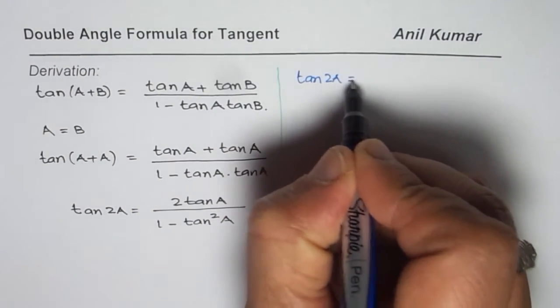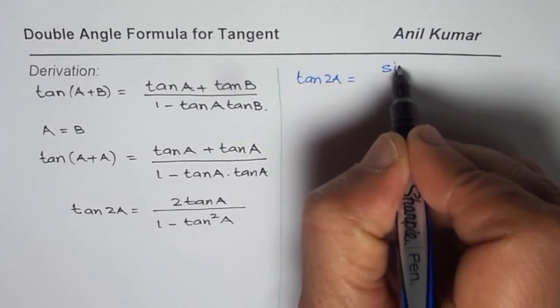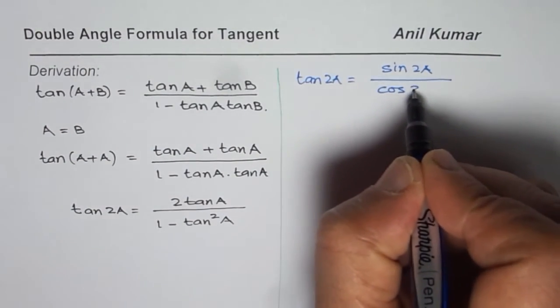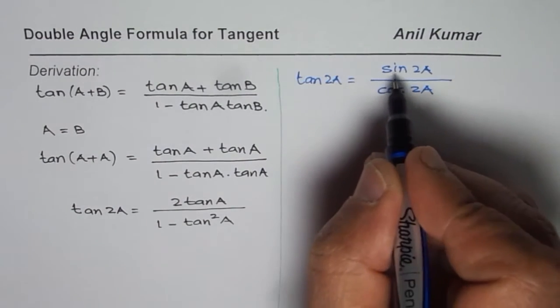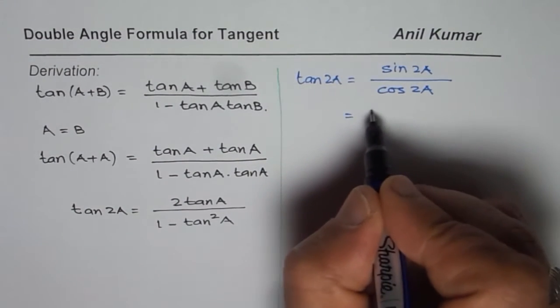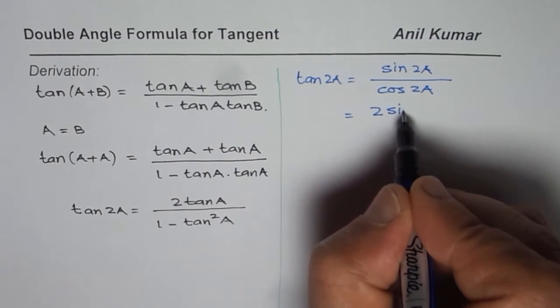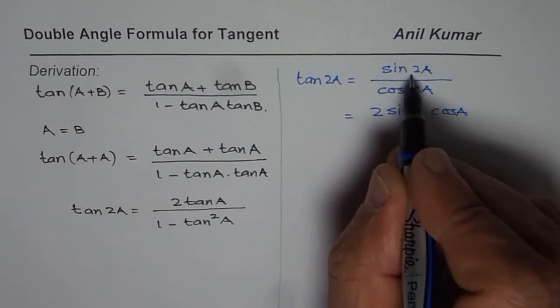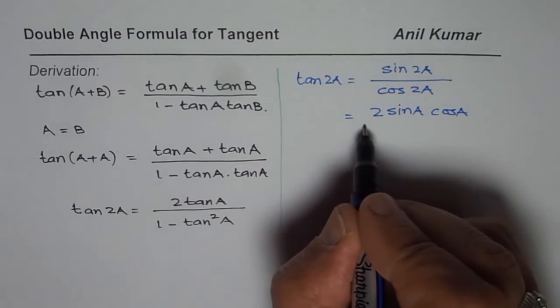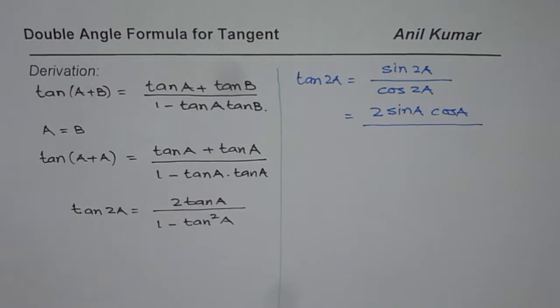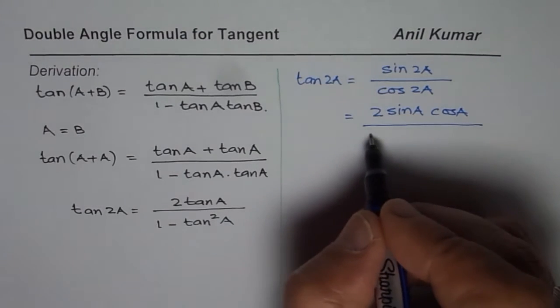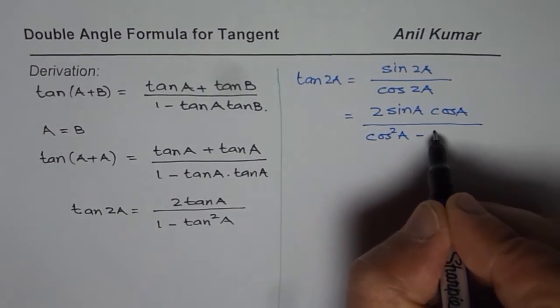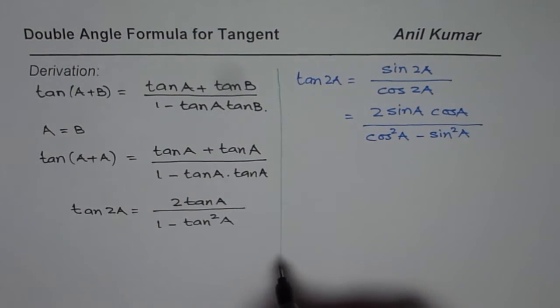So tan(2A) equals sin(2A) over cos(2A). Now what is sin(2A)? Sin(2A) is 2sin(A)cos(A). I have a link to this proof also. And cos(2A) could be written in three different ways. In this one let's use cos²(A) - sin²(A).